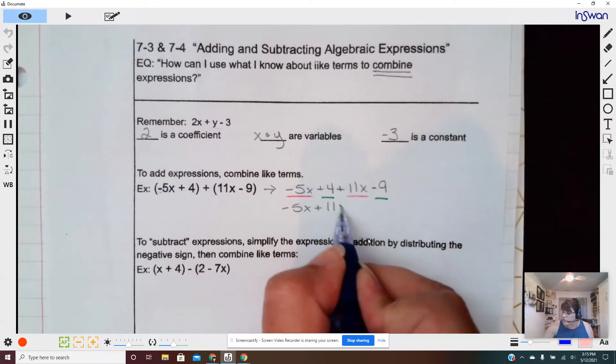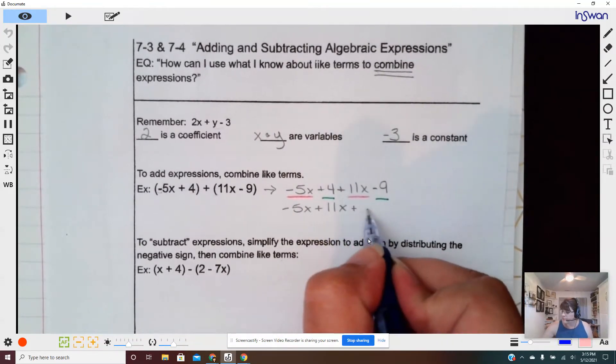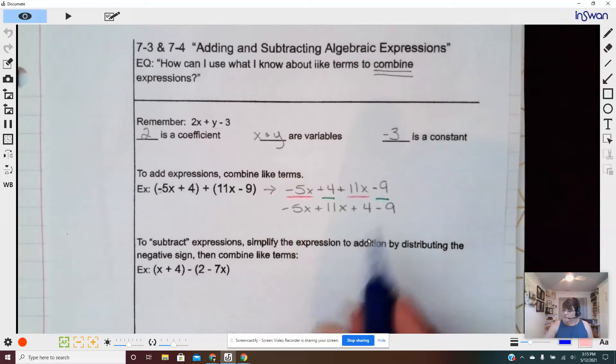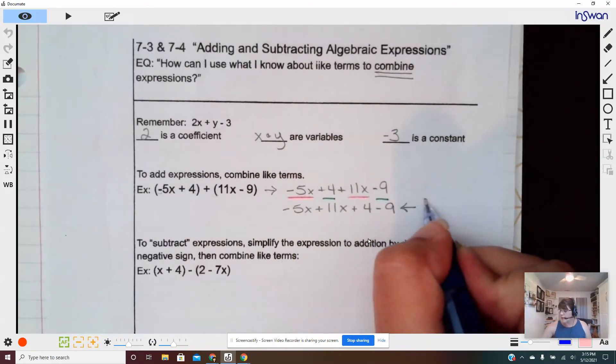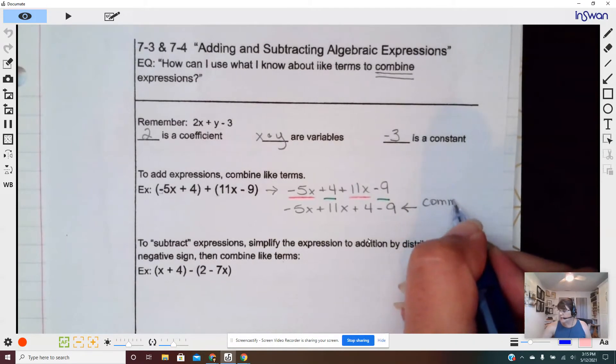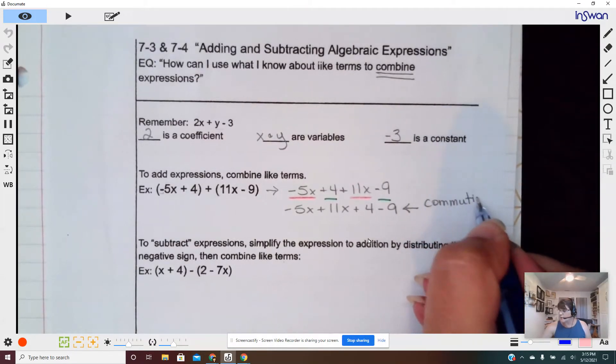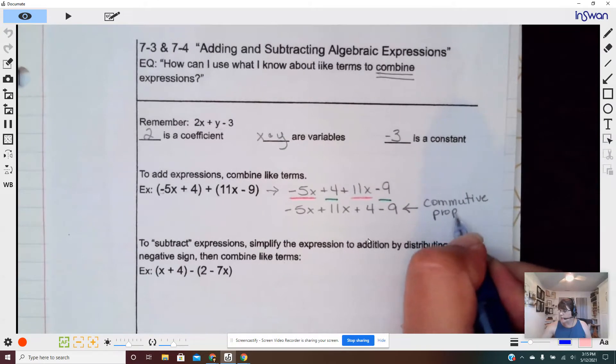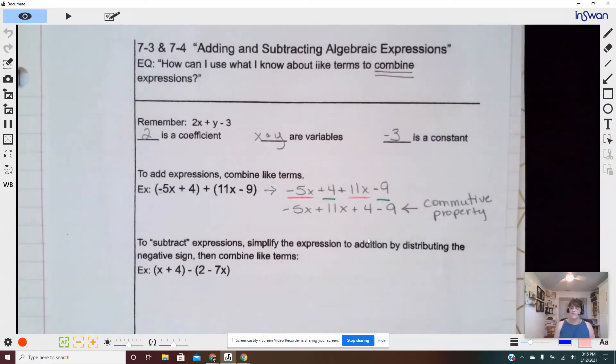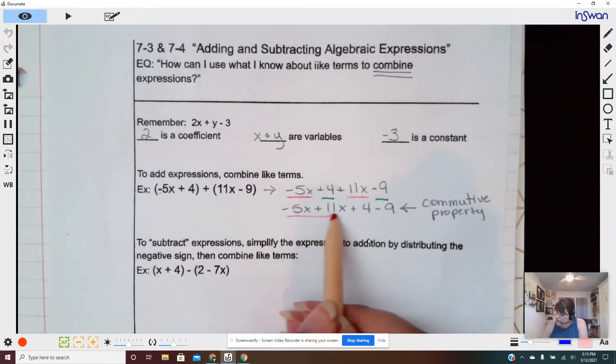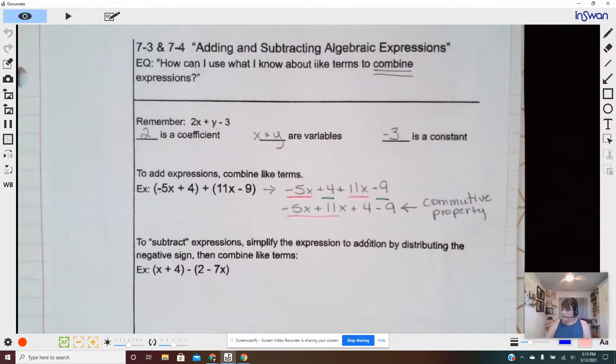So I'm going to put the like terms together. And I can do this. See, nobody changed their value. I just rearranged. I can do this because of commutative property. Remember that one? Nice way to review is when we're actually using it. So these are like terms. And these are like terms.